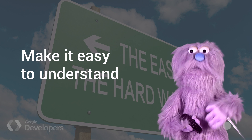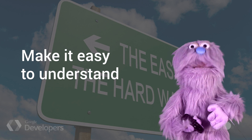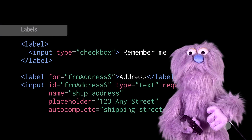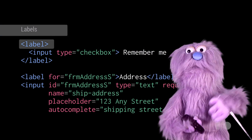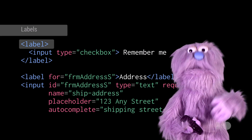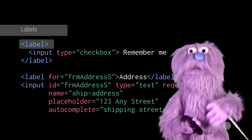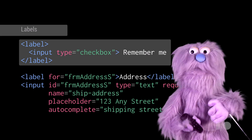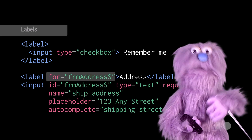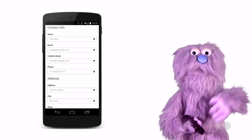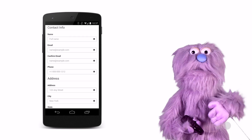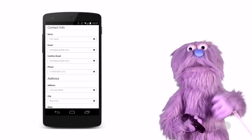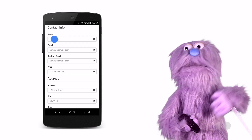Take the pain out of forms by reducing the number of questions that you ask, and be sure to label and name your inputs properly. Use the label element to provide direction to monsters, telling them what information is needed. Each label is associated with an input by placing it inside the label element or by using the for attribute. Using labels also helps to improve touch target sizes. Monsters can either touch the label or the input, and immediately start typing.